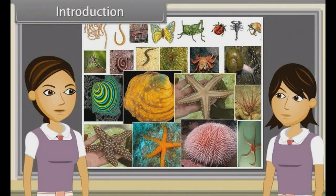Now we are going to discuss characteristics of Hemichordates, Chordates, Vertebrates, Cyclostomata, Chondrichthyes, Osteichthyes, Amphibians, Reptilia, Aves and Mammalia.